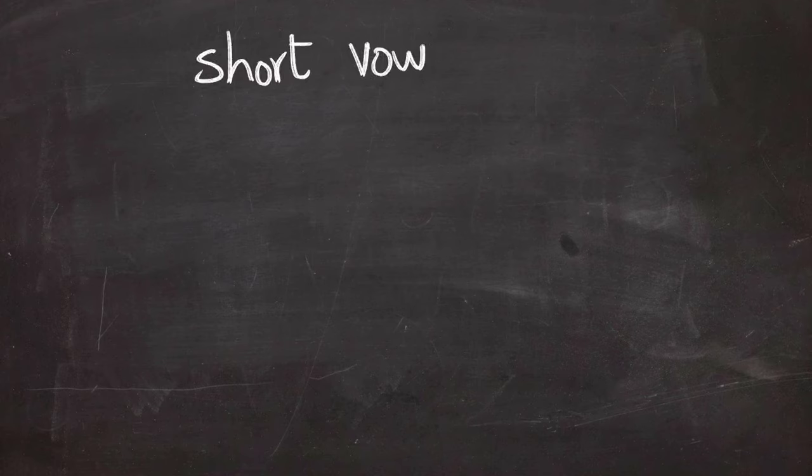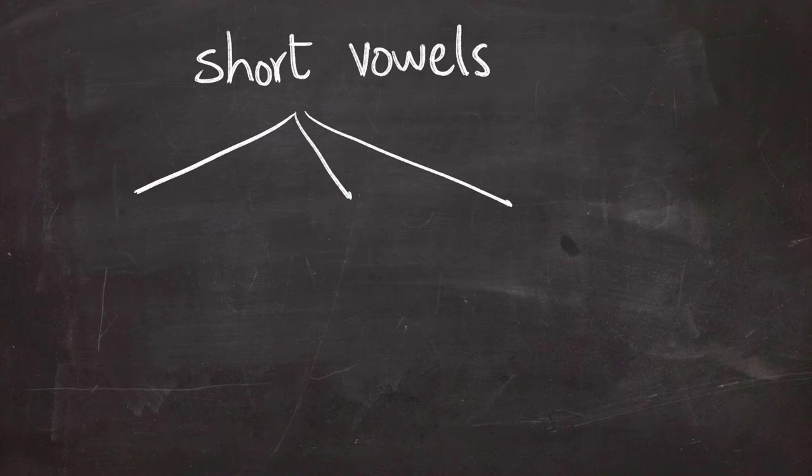Hello everyone, so in lesson two we're going to continue talking about short vowels. What we talked about last time was that short vowels are three: fatha, dhamma, kasra - ba, boo, bi. We also talked about the fact that short vowels have to be pronounced after pronouncing the letter.